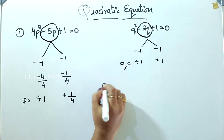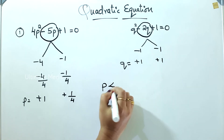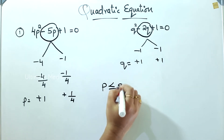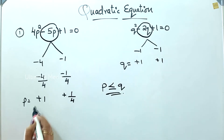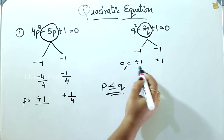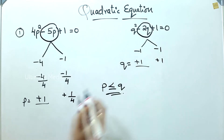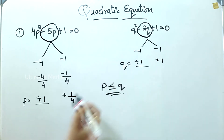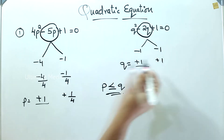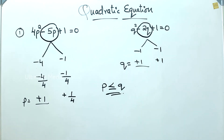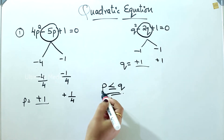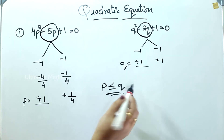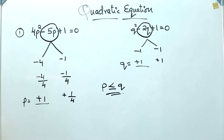What is the value? Here comes the value — 1 by 4. That's the value. q is equal to, p is less than or equal to q. Option is equal to t.